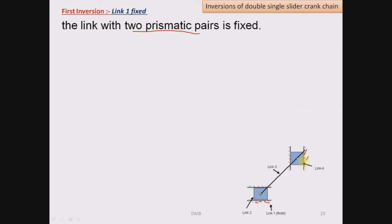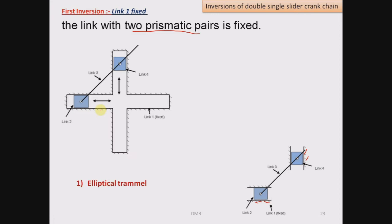One prismatic pair is formed with link number 2 and another prismatic pair is formed with link number 4. So when we fix such link — that is the link forming two prismatic pairs, link number 1 in our case — we get the first inversion. Now by changing the shape of the first link, we get the elliptical trammel.